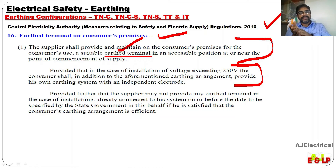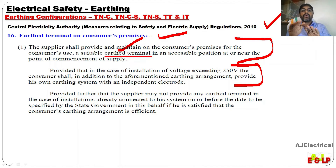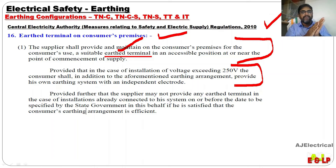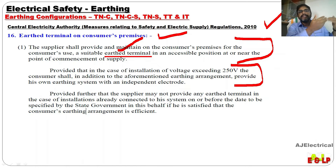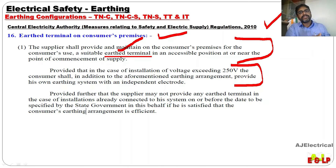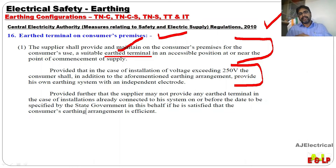Means for those having voltage below or equal to 250 volt, they don't need to have independent earthing — so a single phase consumer is not compelled to have their own earthing arrangement. The earthing given by the supplier is enough. But for three phase consumers, in addition to the earthing given by the supplier, they must have their own earthing arrangement.